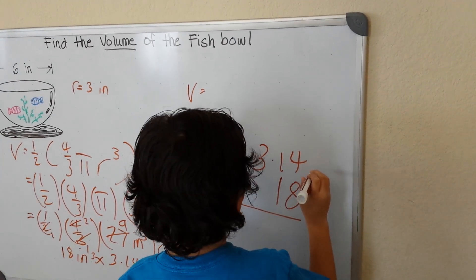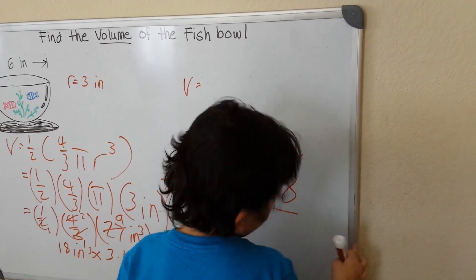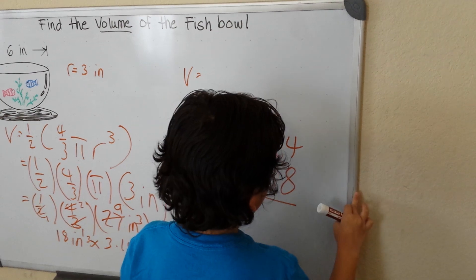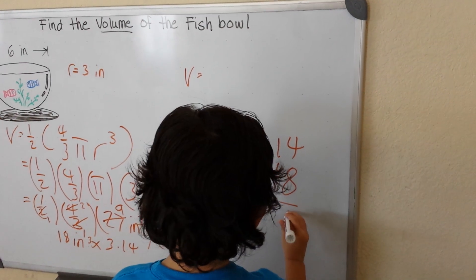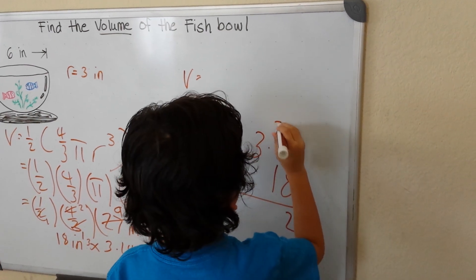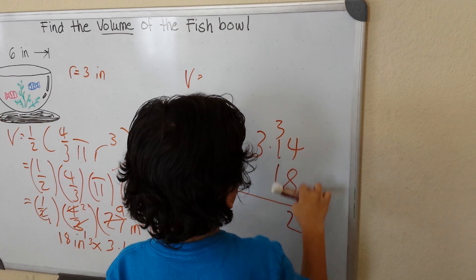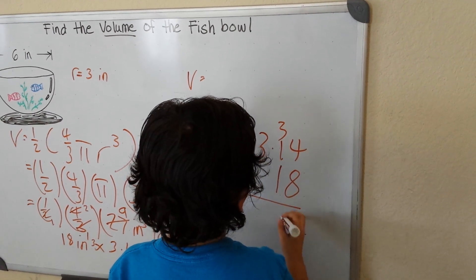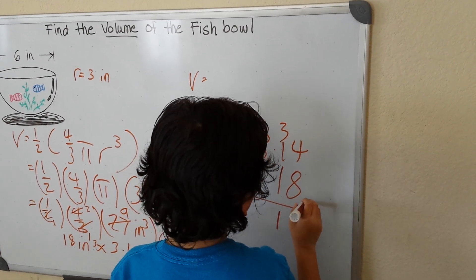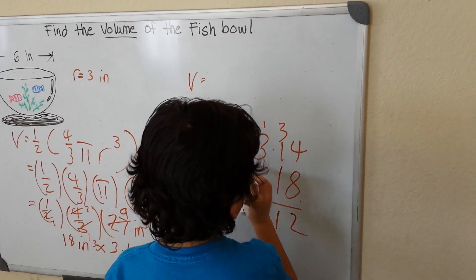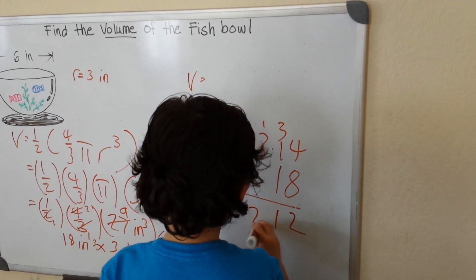8 times 4 is 32, carry the 3. 8 times 1 is 8, plus 3 is 11, carry 1. 8 times 3 is 24, plus 1 is 25.